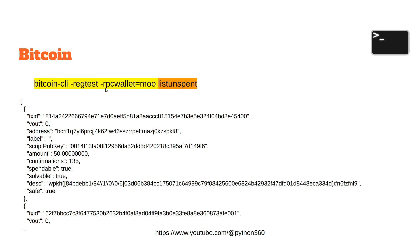Bitcoin CLI regtest rpcwallet equals mu, list unspent. If you were creating a wallet or writing code to create a wallet, you would probably list unspent transactions, because you need to list the unspent transactions to work out which ones to use to make a payment with. We can also see the script pubkey, which goes into vout or an outgoing transaction.